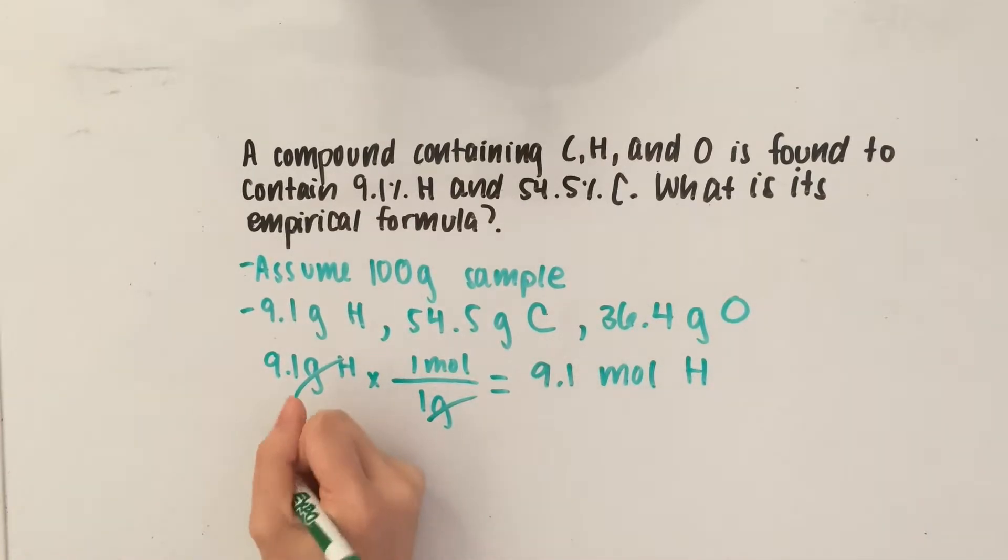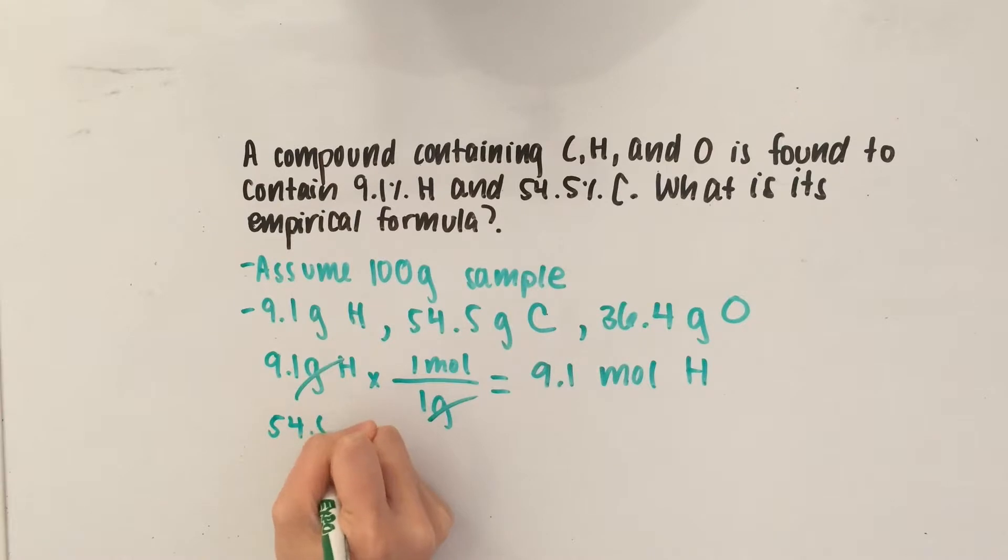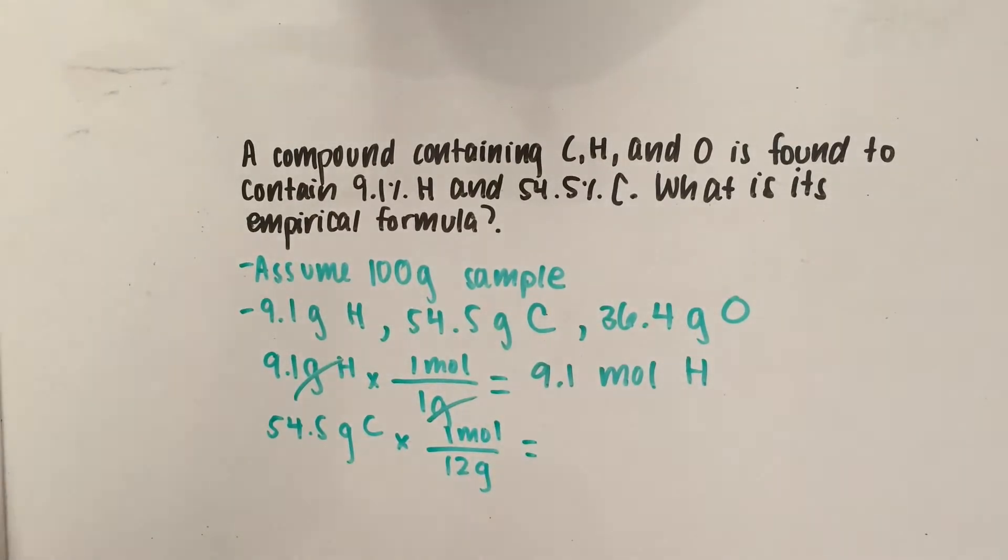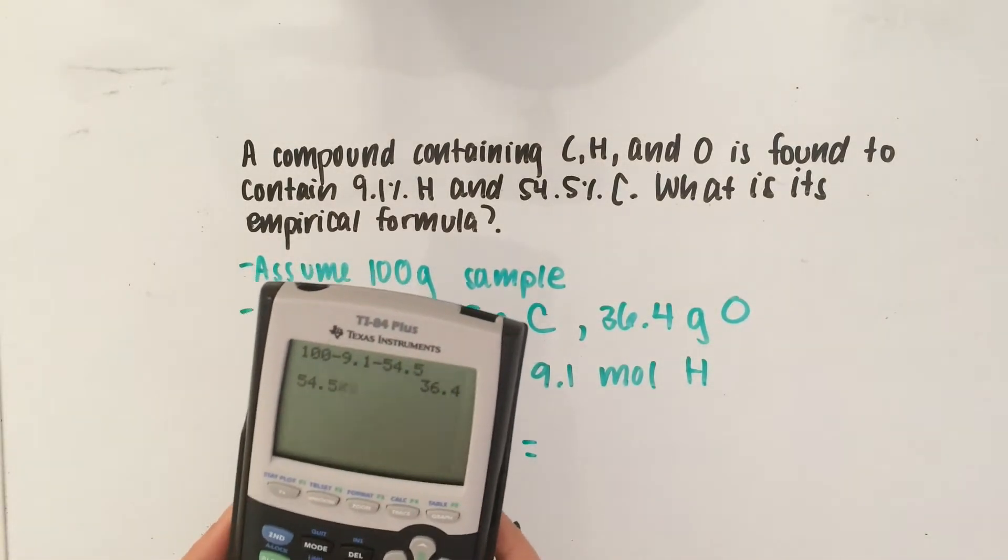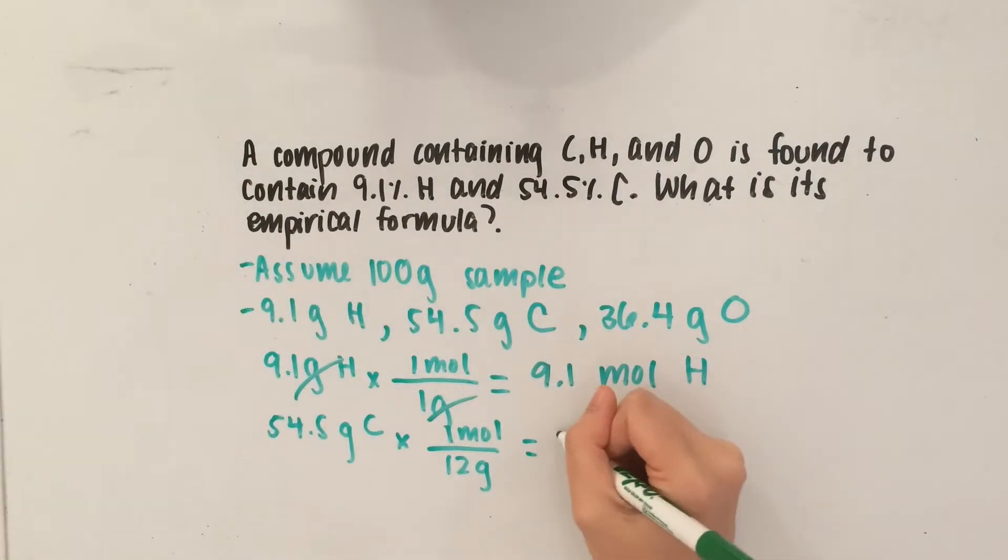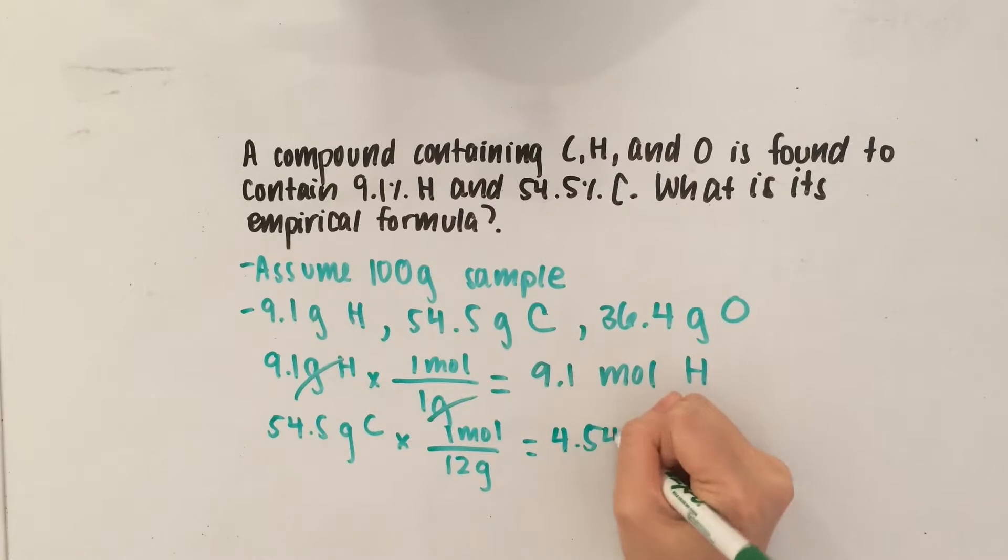Now, let's do it for carbon. 54.5 grams of carbon, and there's 12 grams per mole for carbon, and 54.5 divided by 12 gives you 4.54, and that's moles of carbon.